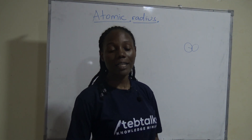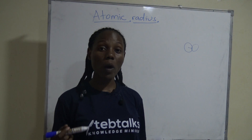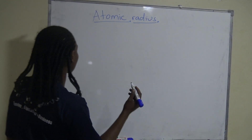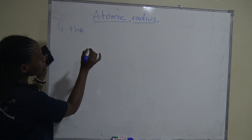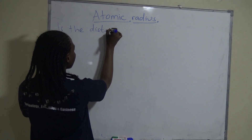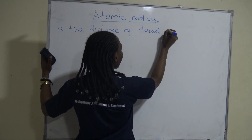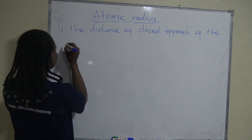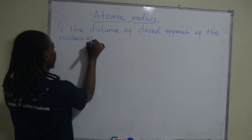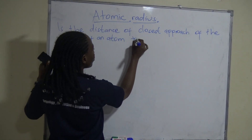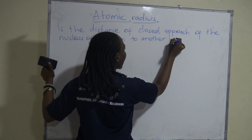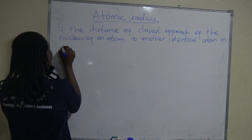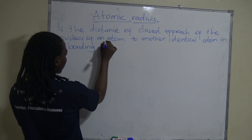By definition, the atomic radius is the distance of closest approach from the nucleus of one atom to another identical atom in a bonding situation. It is the distance of closest approach of the nucleus of an atom to another identical atom in a bonding situation.